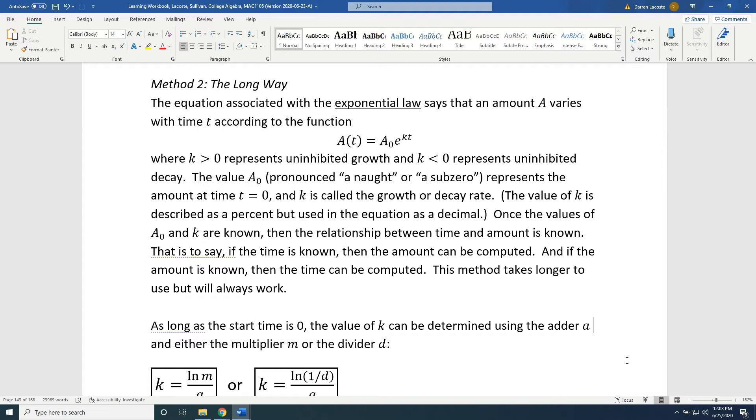The value of k is described as a percent, but used in the equation as a decimal. Once the values of A₀ and k are known, then the relationship between time and amount is known. That is to say, if the time is known, then the amount can be computed. And if the amount is known, then the time can be computed. This method takes longer to use, but will always work.